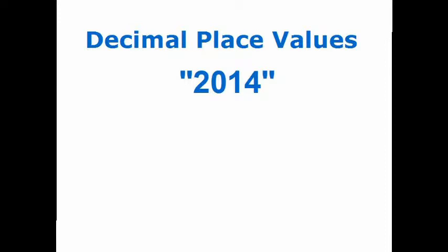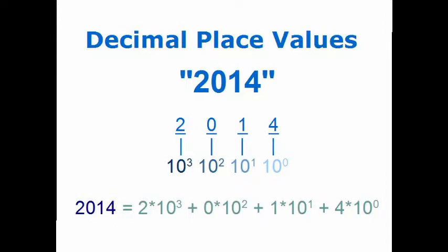We use the place value system to represent numbers of any base. Let us consider the number 2014. We split the numerals and note that each numeral corresponds to a power of the base, in this case, powers of 10. Powers start from 0. The numerals act as the coefficients of their corresponding base powers in a polynomial. Adding the terms up gives you the final number 2014. This is how numbers are represented in the decimal system.